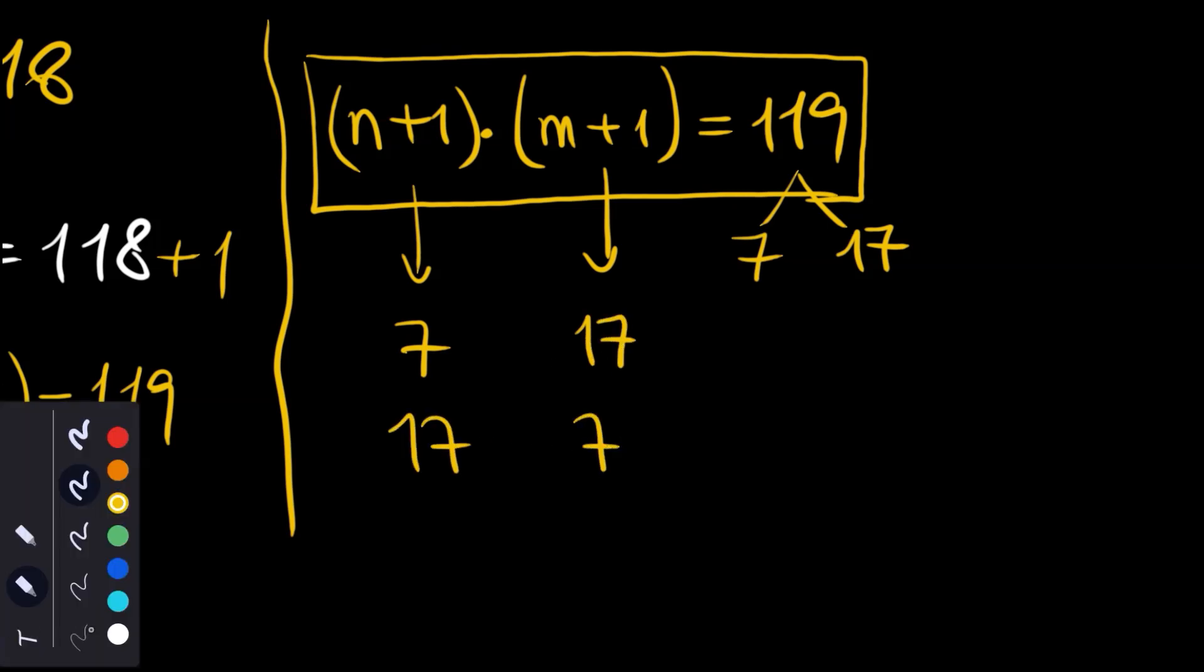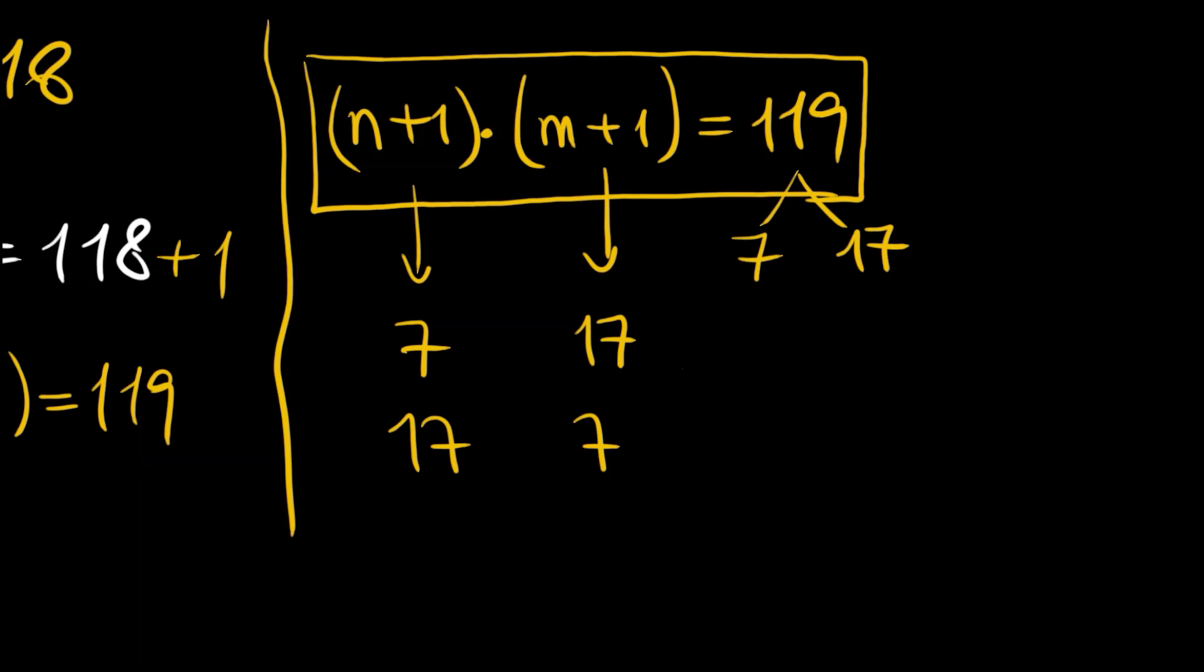This may be 7, this may be 17, or vice versa. If n plus 1 is 7, n is 6, and m plus 1 is 17, m is 16.